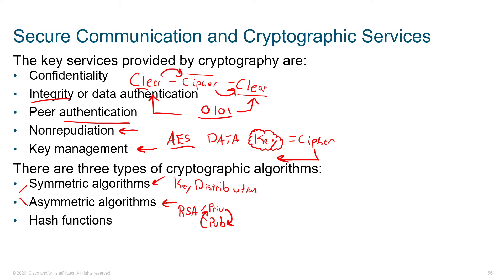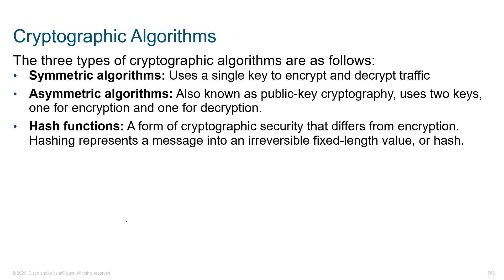We use asymmetric for key generation, and once those keys are generated, we use symmetric because it's so much faster. Last but not least, we've got hashing functions, and these are what are responsible for providing us with integrity. As a review: symmetric algorithms use a single key to encrypt and decrypt traffic. The challenge is we've got to get that key to the other side.